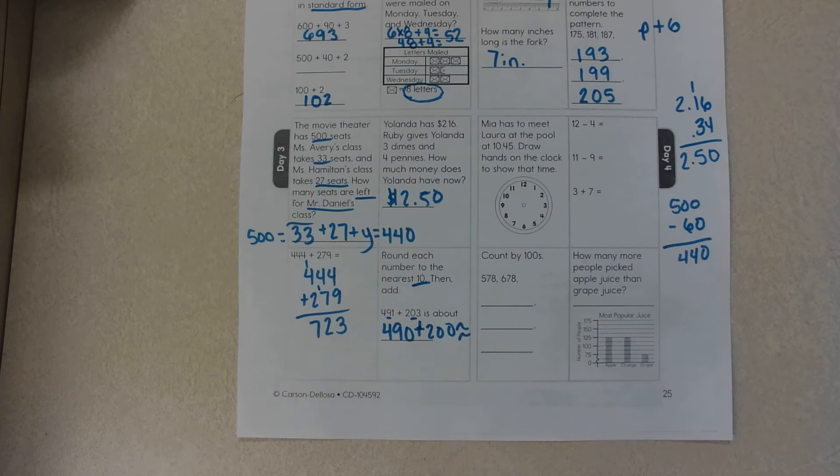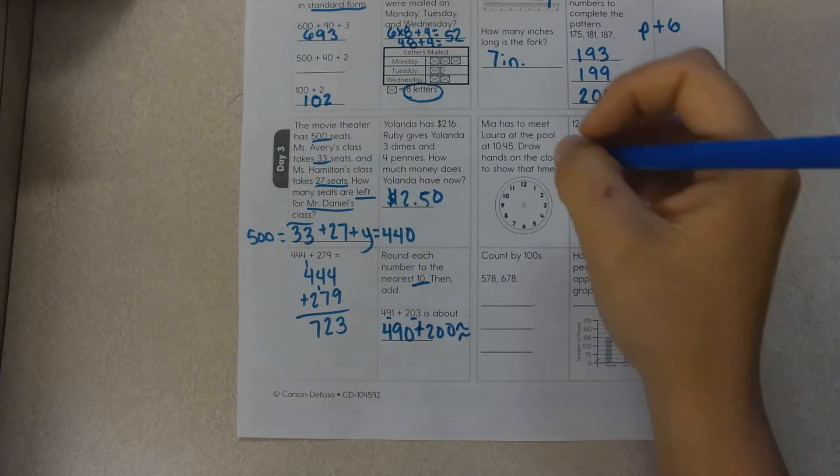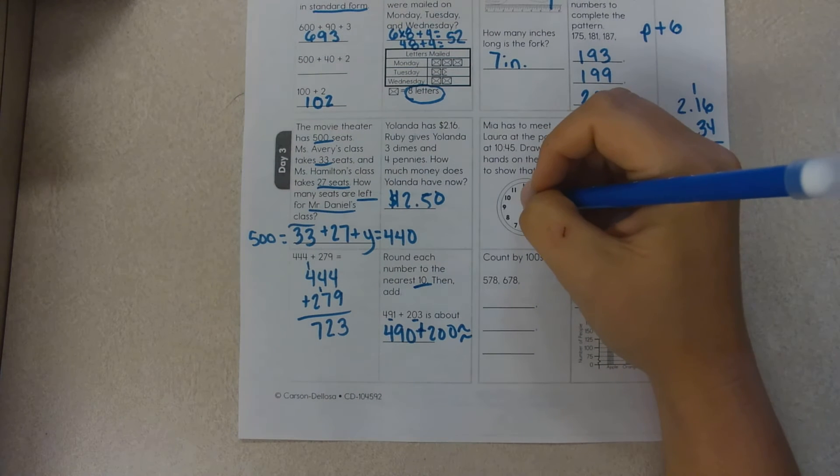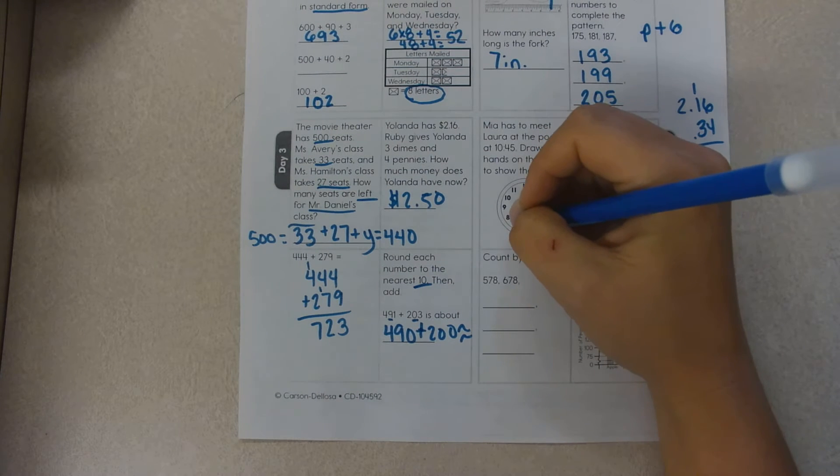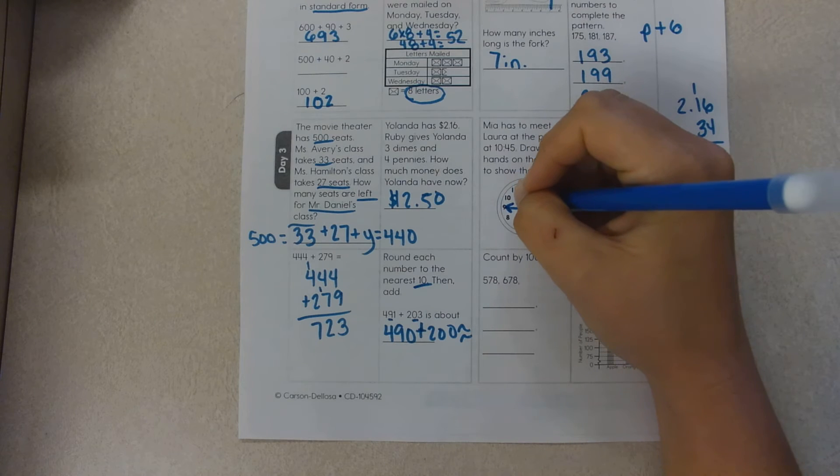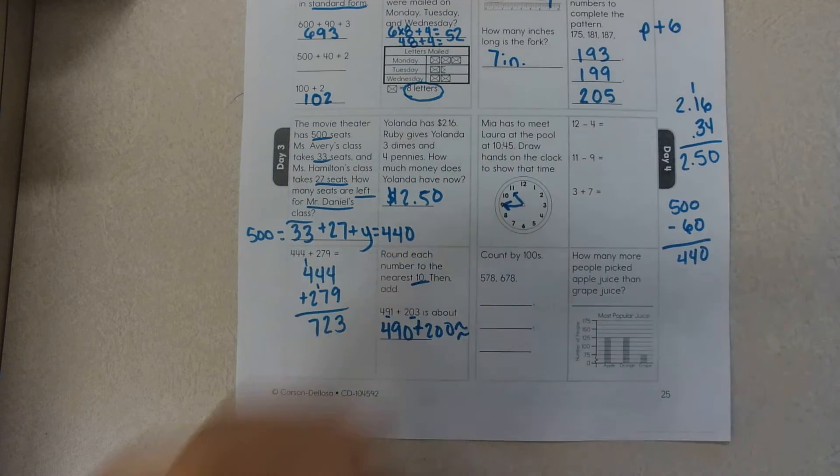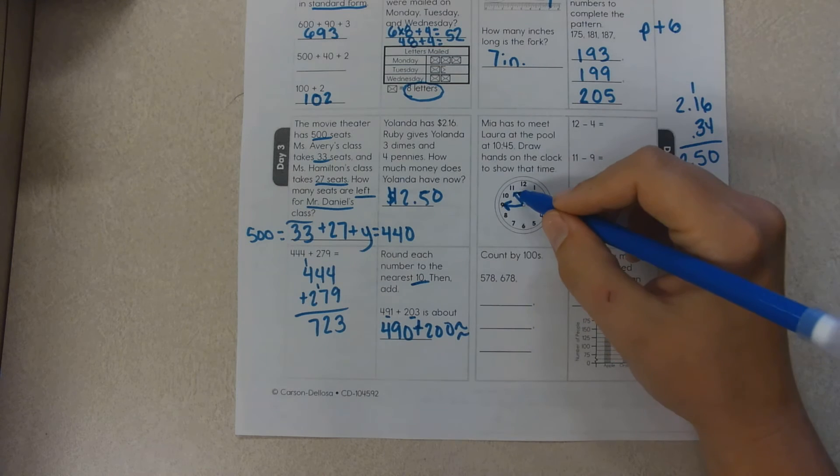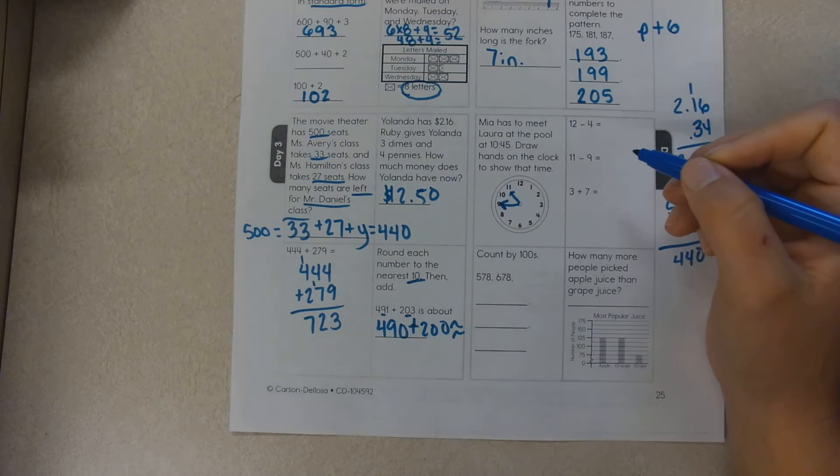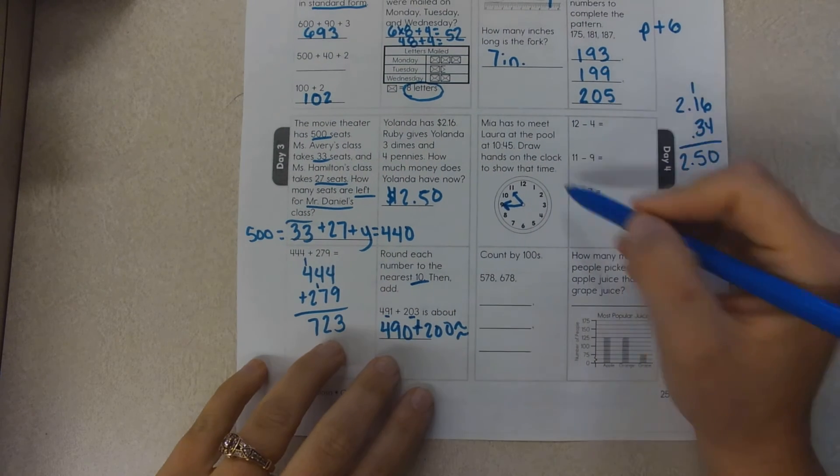Girls, we are on week 9, day 4 of math for today. Mia has to meet Laura at the pool at 10:45. So this is 30, 35, 40, 45, and it's way over, it's almost 11 o'clock. Draw the hands on the clock so it's between 10 and 11 and it's closer to 11.